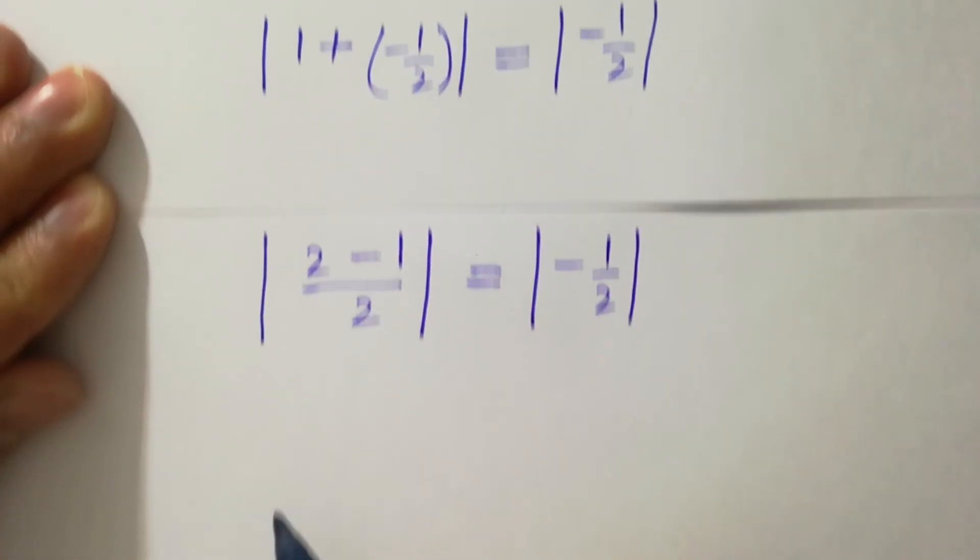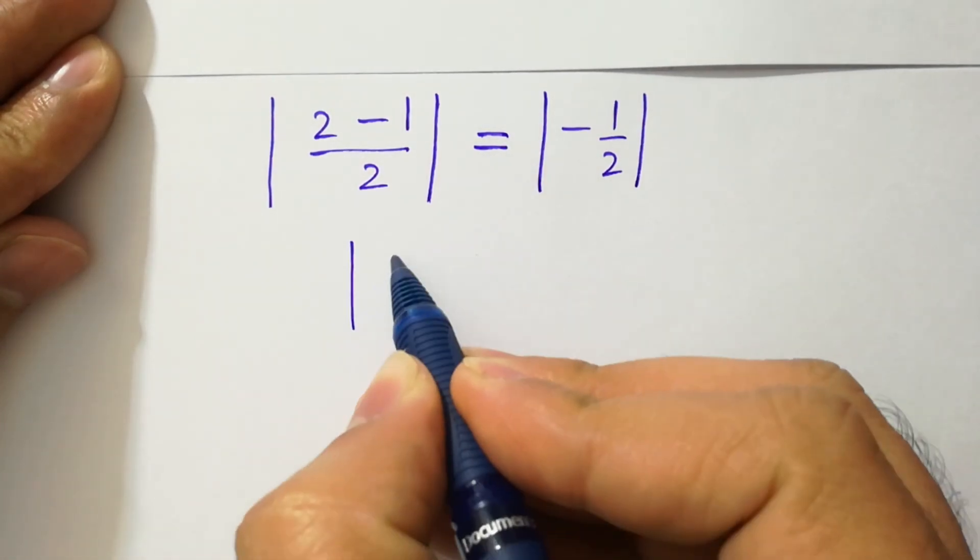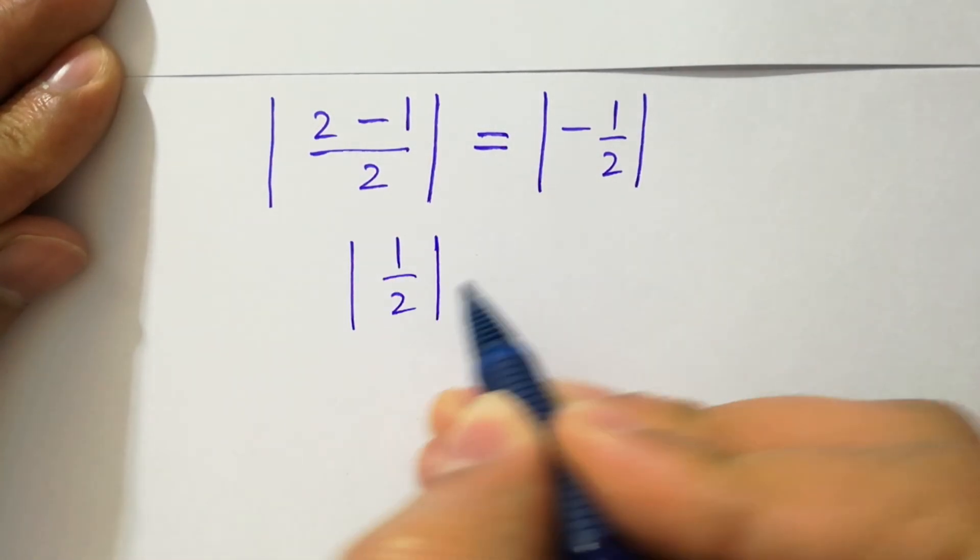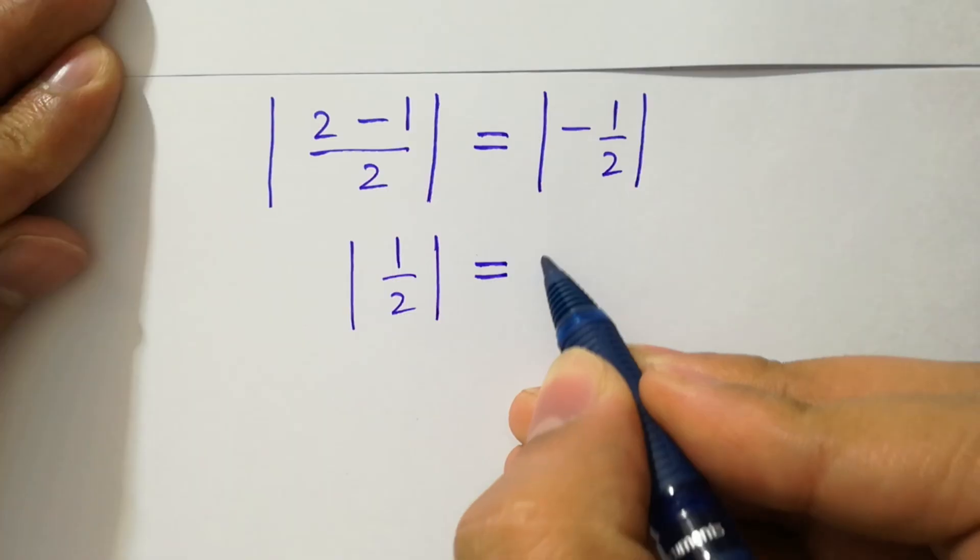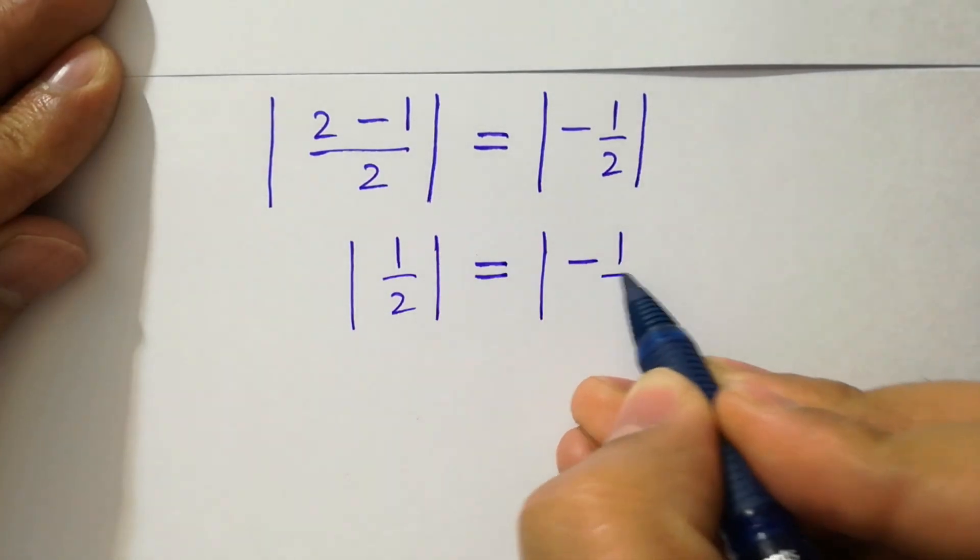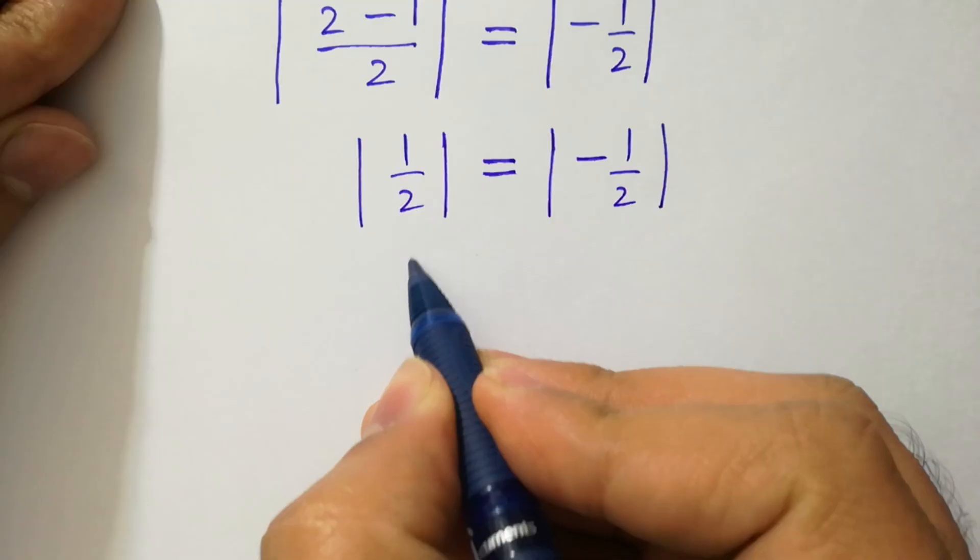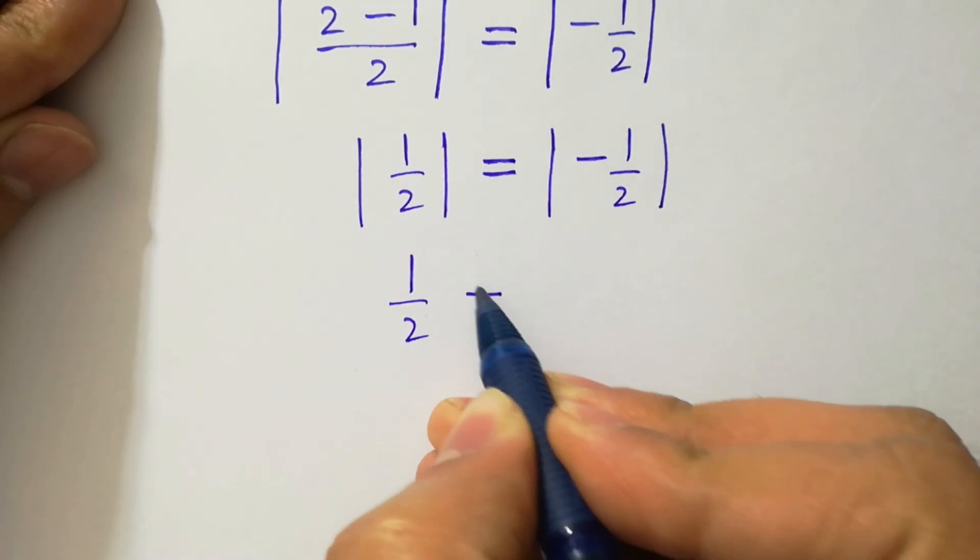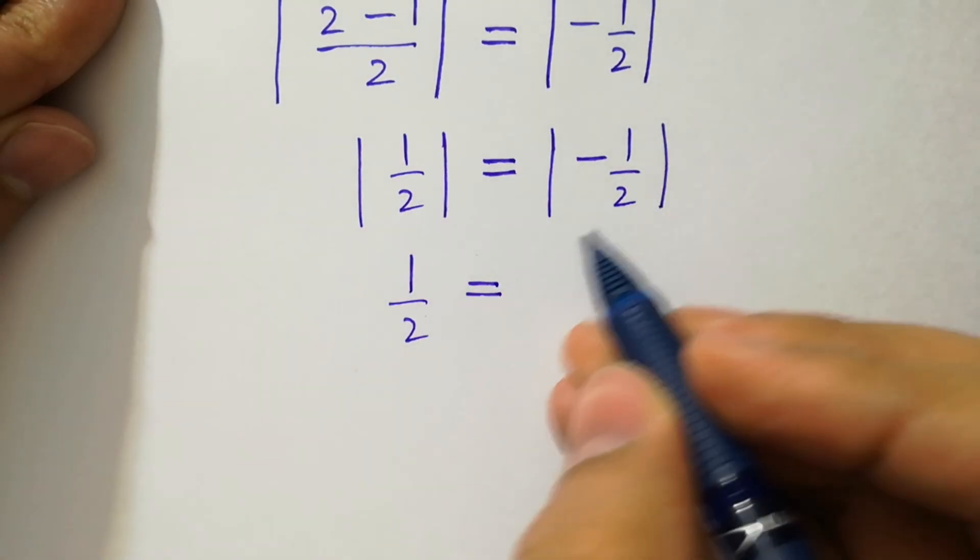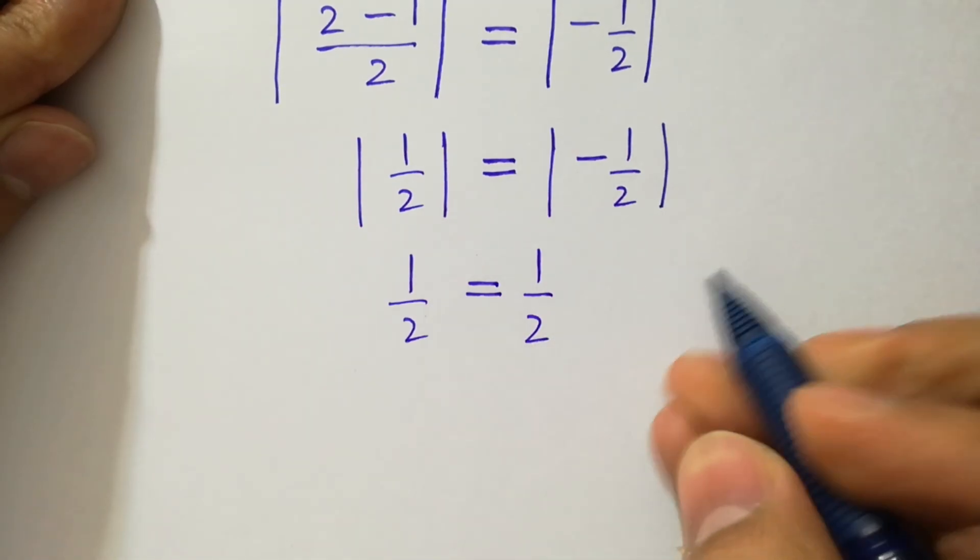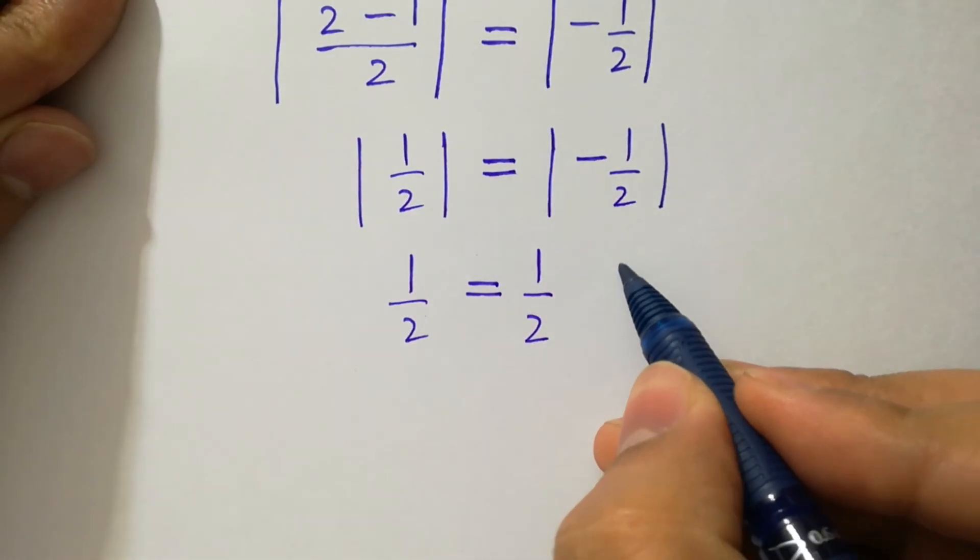2 minus 1 is 1 over 2 equals absolute value of minus 1 over 2. 1 over 2, we have here 1 over 2, which equals minus 1 over 2. Minus becomes plus 1 over 2, which shows that this is possible.